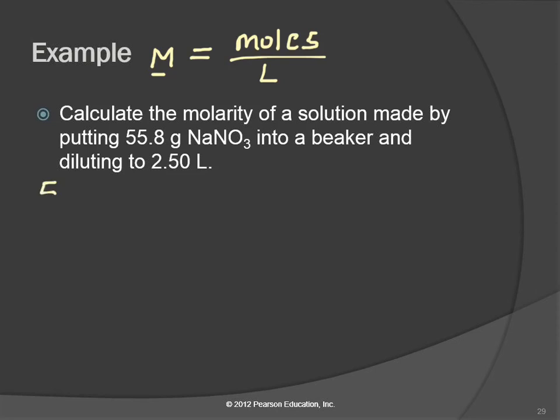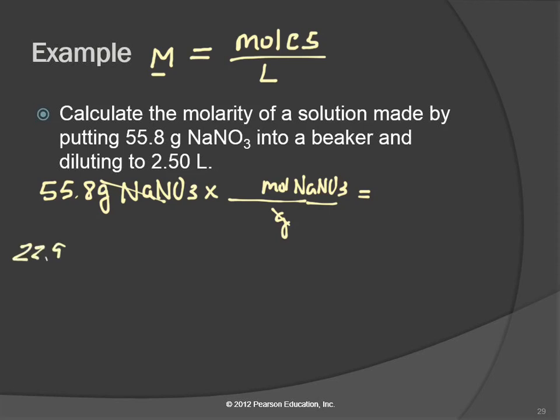So 55.8 grams of sodium nitrate, and we need to find how many moles that is. So moles of sodium nitrate per gram. We need the molar mass. Sodium is 22.99, nitrogen is 14.01, and we have three oxygens, each 16. We add those up: 22.99 plus 14.01 plus 3 times 16. The molar mass of sodium nitrate is 85.00 grams, and that equals one mole.